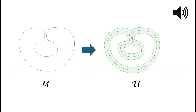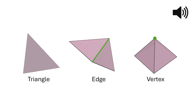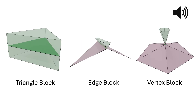Our method works by inflating codimensional objects into volumetric objects. There are three types of faces on a triangular mesh: triangles, edges, and vertices. Our method offsets each type of face along its normal to construct volumetric building blocks, shown as the green blocks.